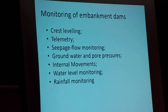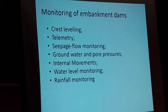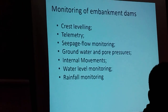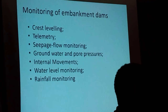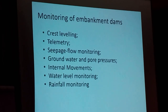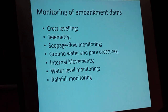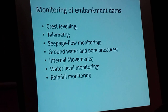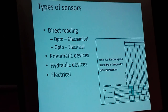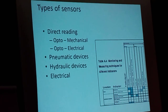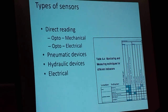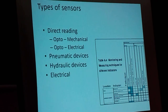For embankment dams, the key things we monitor are crest leveling, telemetry, seepage flow monitoring, groundwater and pore pressure, internal movements, water level monitoring, and rainfall data monitoring. Types of sensors which could be used include those for direct reading — which could be mechanical or electrical — as well as pneumatic devices, hydraulic devices, or electrical devices.